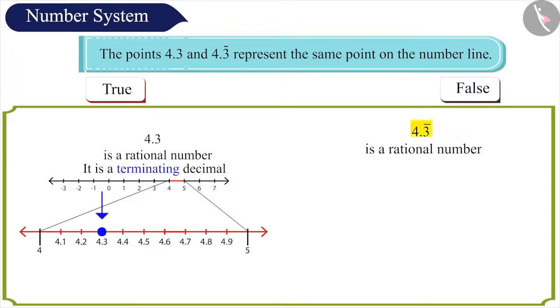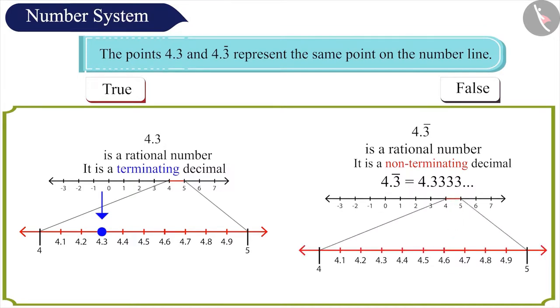But 4.3 bar is a non-terminating decimal. Here, the number 3 is repeating itself after the decimal. This number will lie on the number line between 4.3 and 4.4.